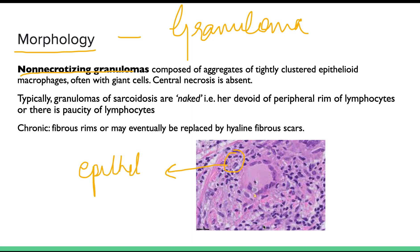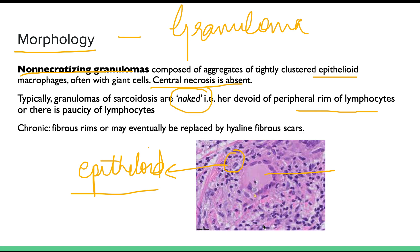The macrophages change into epithelioid cells. Giant cells are also present, but central necrosis is absent in sarcoidosis. Also, the granulomas of sarcoidosis do not have lymphocytes around them — there is no peripheral rim of lymphocytes as seen characteristically in tuberculosis. Because of the absence of this lymphocyte rim, these granulomas are called naked granulomas.